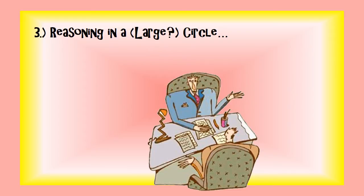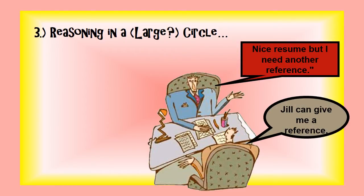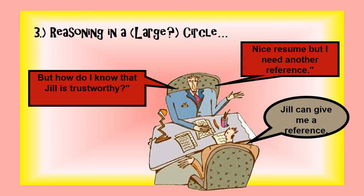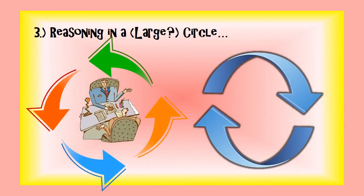Another way begging the question can occur is if a person talks themselves into a circle, but a rather large circle — this is harder to spot. Like if an employer says nice resume, but I need another reference, and the applicant says Jill can do that for me. But how do I know Jill is trustworthy? The applicant says, well, I can vouch for her. This person has really just used his own trustworthiness to prove his own trustworthiness, just not in an explicit way.